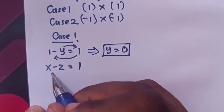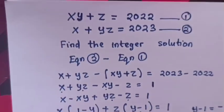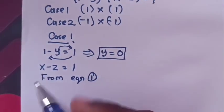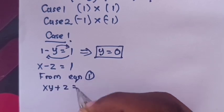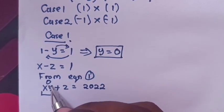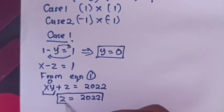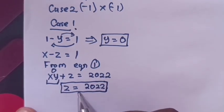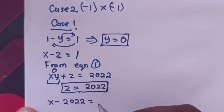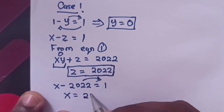To find x and z, we use equation 1: xy + z = 2022. Substituting y = 0 gives z = 2022, which is an integer. Then substituting z = 2022 into x - z = 1 gives x - 2022 = 1, so x = 2023. These are the answers for Case 1.